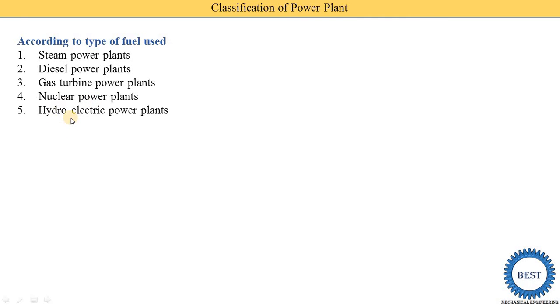In the hydroelectric power plant, mechanical energy from the turbine is supplied to generators to produce electrical energy. The second classification is according to the mobility of the plant.